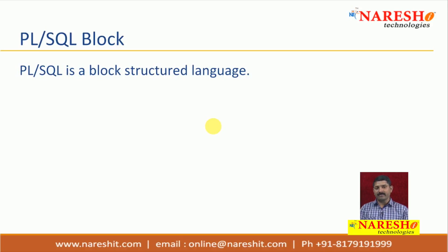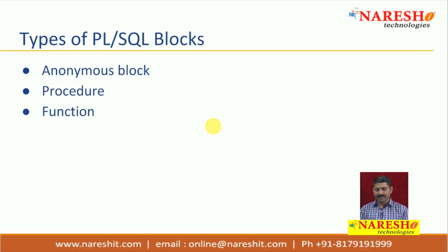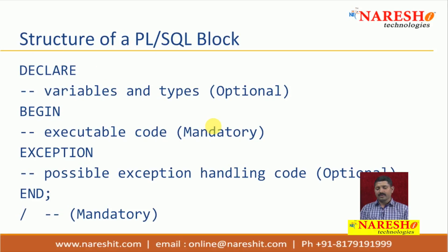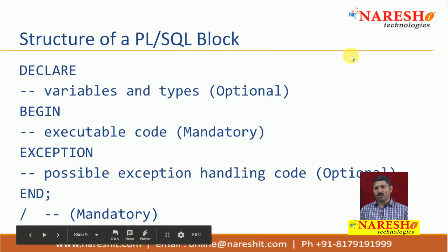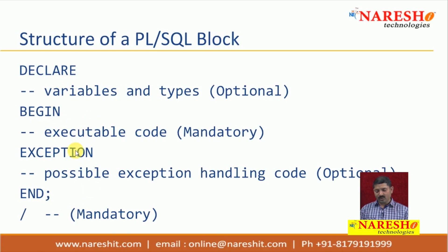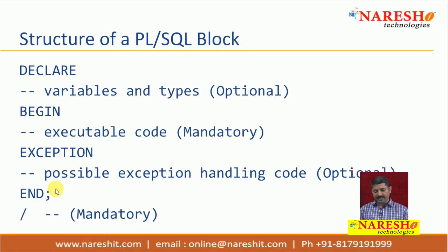PL/SQL is a block-structured language. Whatever programs you write, the parts of those programs are all written in different blocks. A PL/SQL program basically has four different blocks. The types of blocks are: anonymous block, procedure, and function. The normal structure of a PL/SQL block has four parts: DECLARE, BEGIN, EXCEPTION, and END. As you can see on the screen, this whole code is called a block, and the small parts of that block are also called blocks.